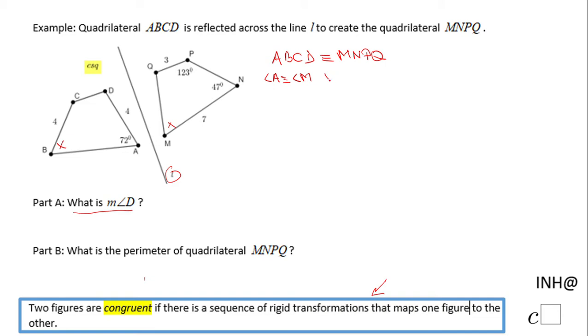You can say that angle A is congruent to angle M, or simply the measure of angle A equals the measure of angle M. If we take a look, the measure of angle A is 72 degrees, so that means M is 72 degrees.